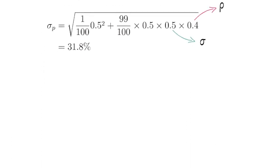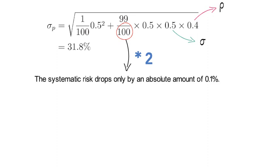Interestingly, as one doubles the number of assets to 200, systematic risk drops, but it only drops by an absolute amount of 0.1%, which practically speaking is just nothing.